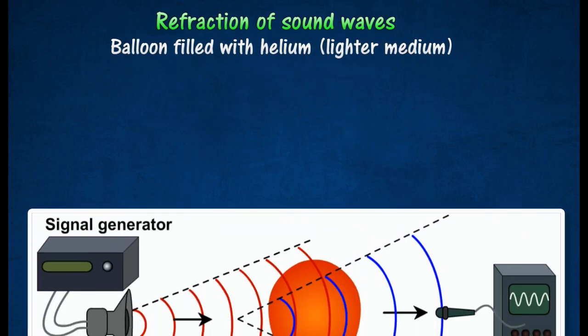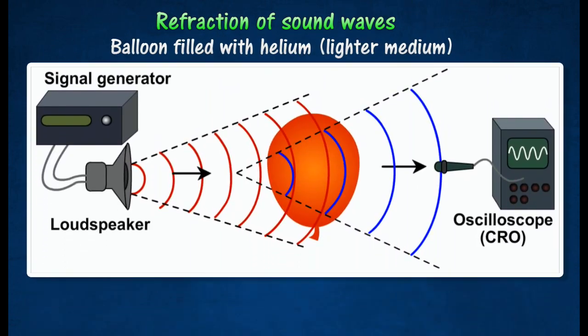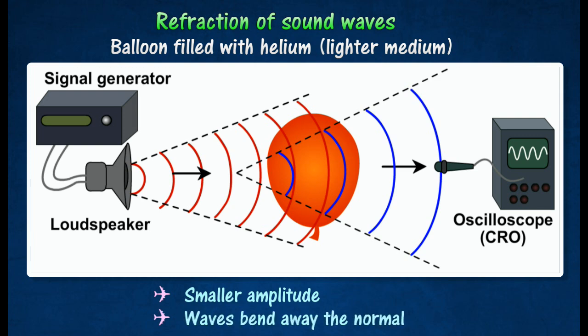The experiment is repeated using a balloon filled with helium gas which is less dense than air. The amplitude recorded by the oscilloscope is smaller. This is because the sound waves bend away from the normal, since the waves travel from denser to a less dense medium.